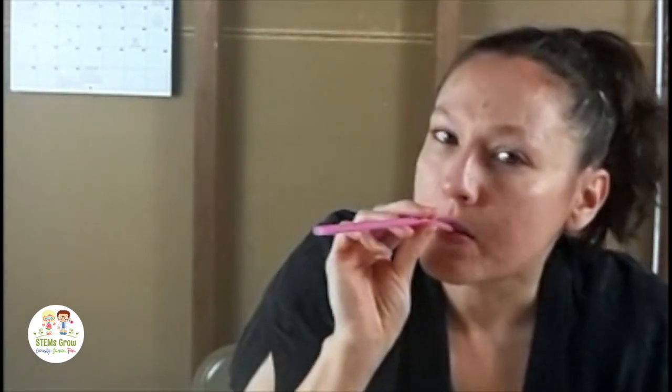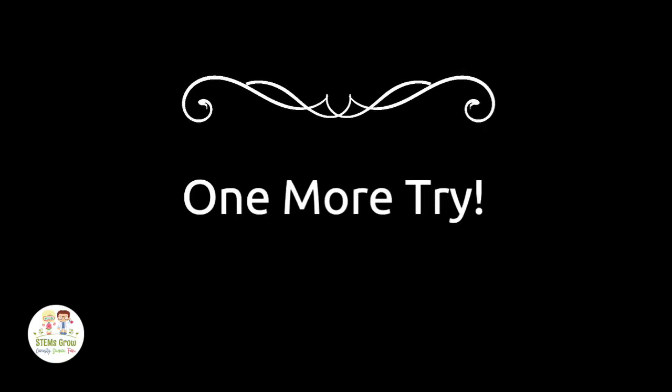The first activity we're going to do is we're going to make a square bubble. Nope, not square. We can see when we blow a bubble, it's always going to be round.